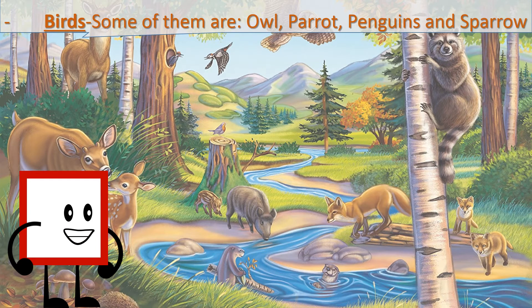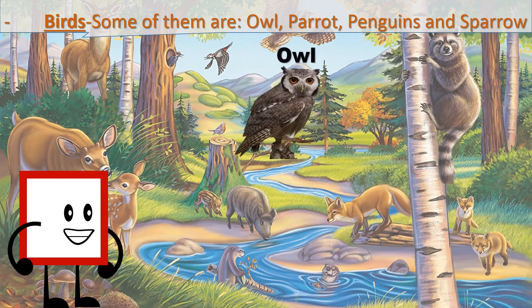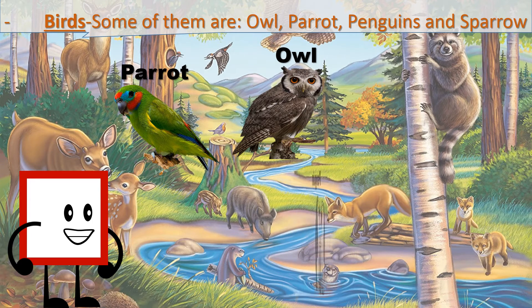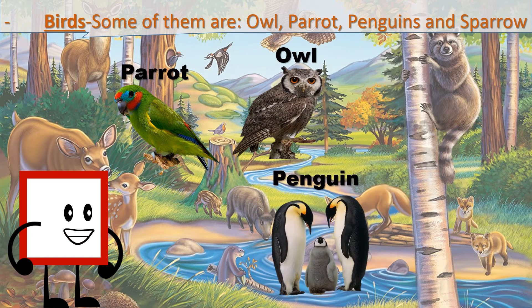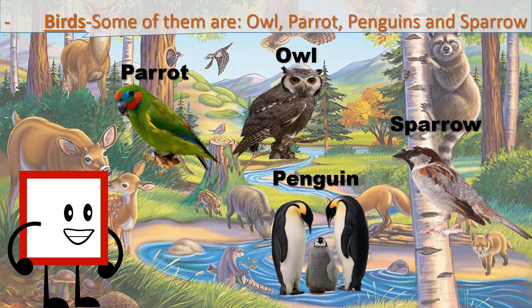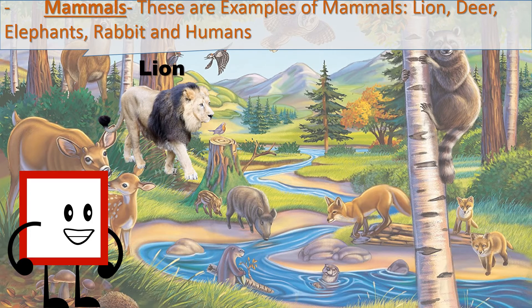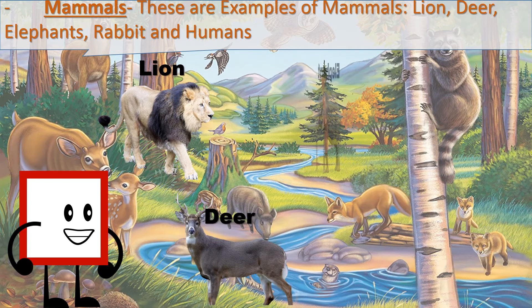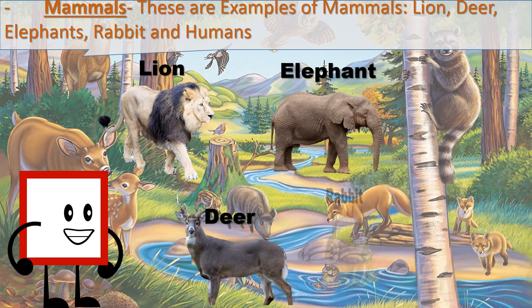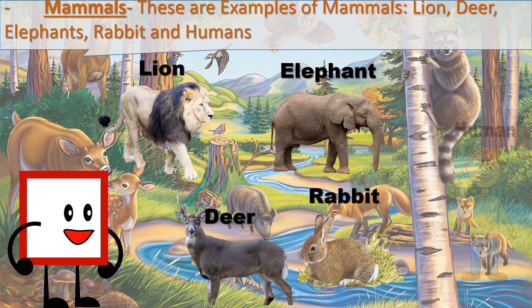Birds — some examples are owl, parrot, penguins and sparrow. Mammals — examples of mammals are lion, deer, elephants, rabbits and humans.